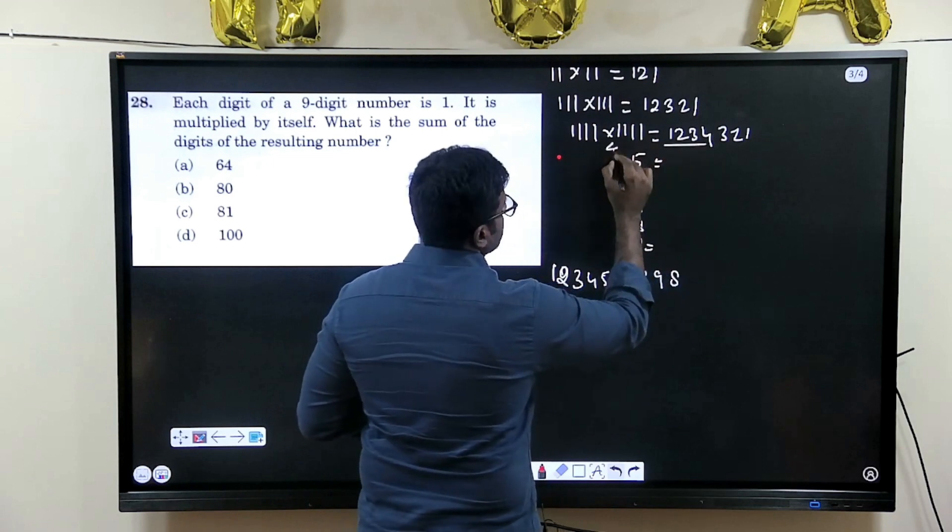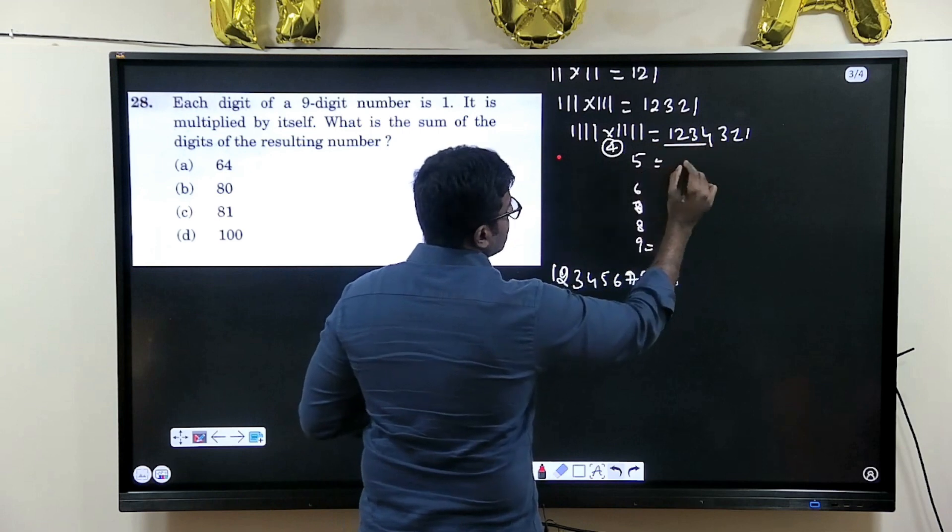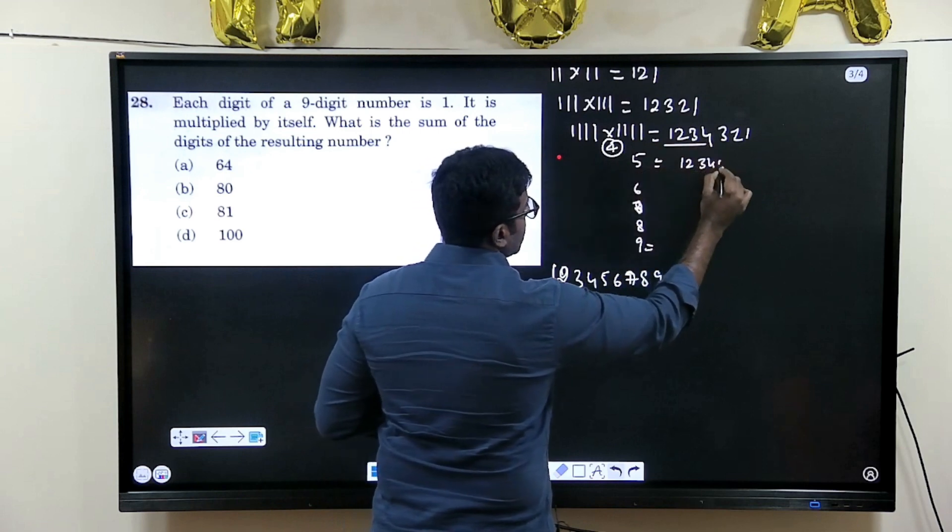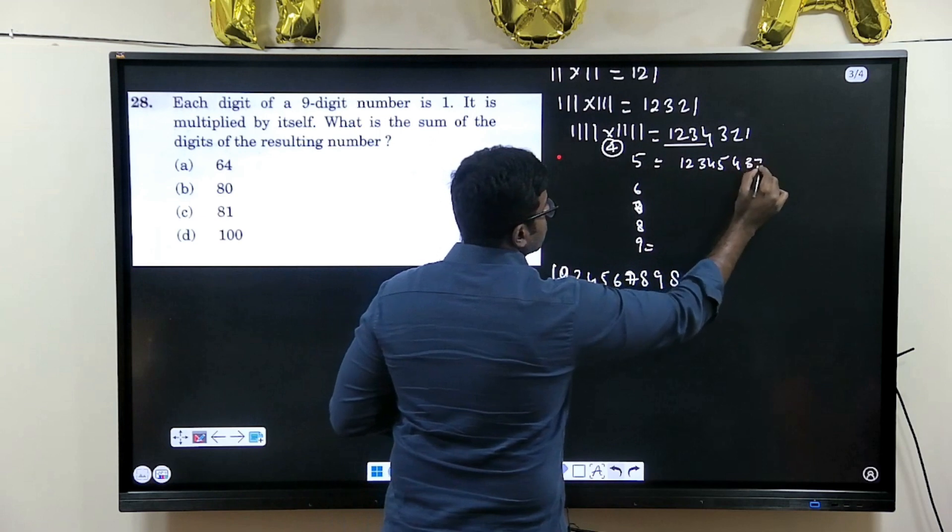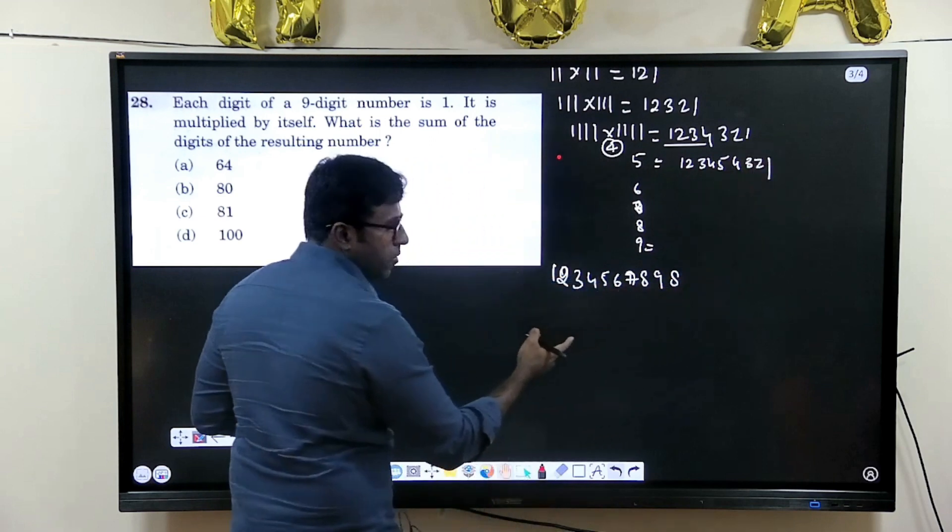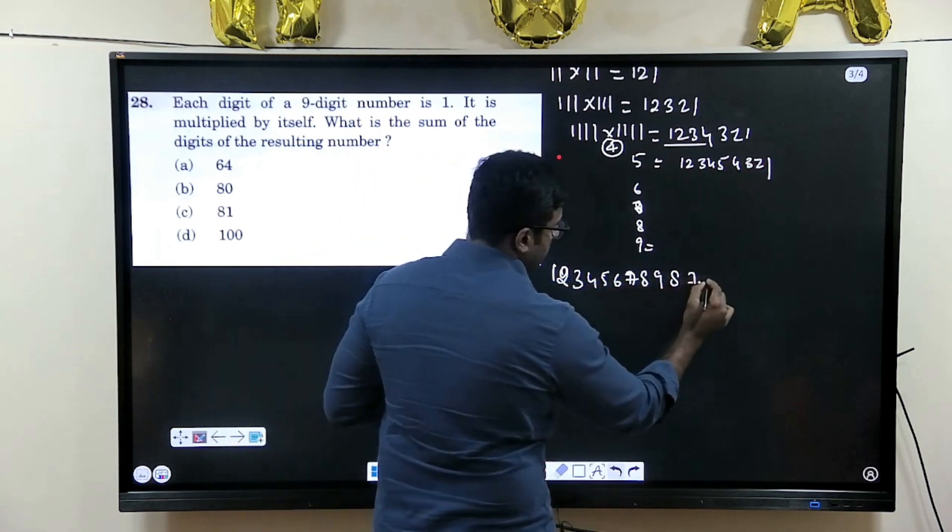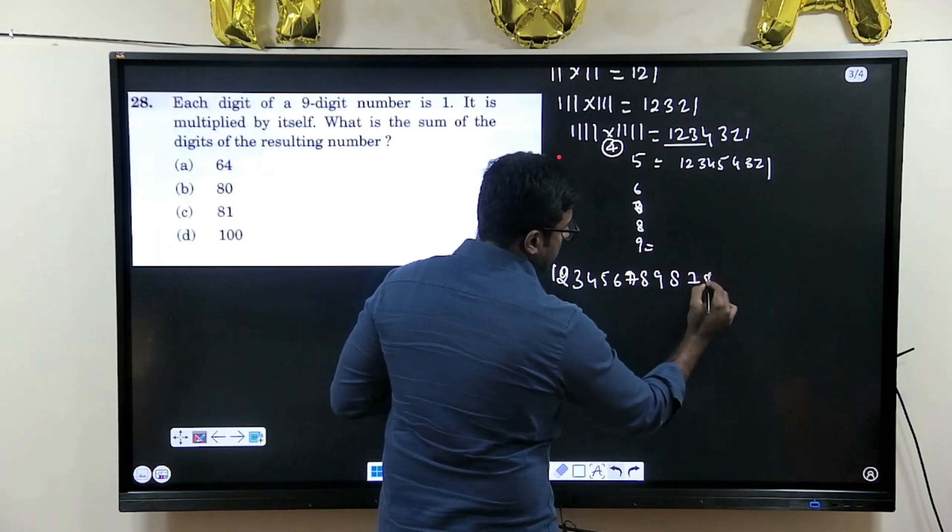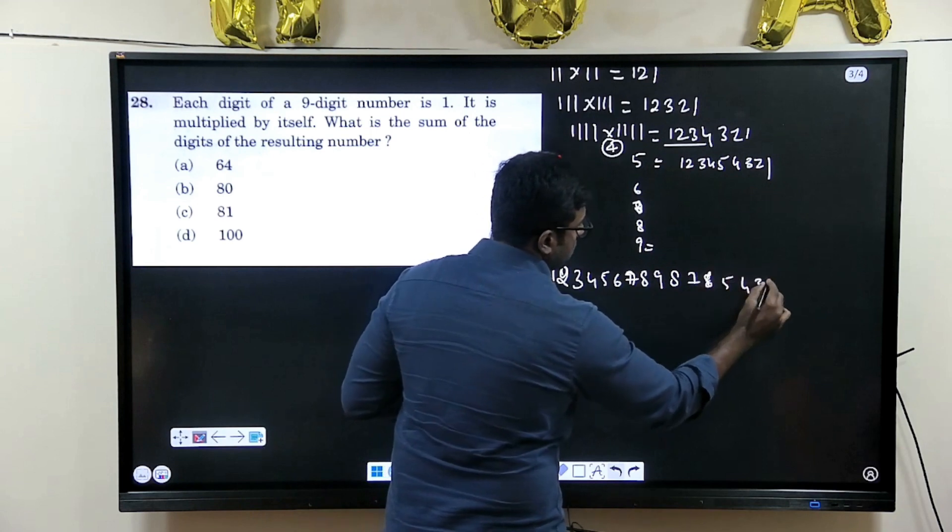Then you see this, if it is 4 means you will have 1, 2, 3, 4, 5 means 1, 2, 3, 4, 5, 4, 3, 2, 1. Similarly, you will have for 9, 1, 2, 3, 4 and 7, 8, 7, 6, 5, 4, 3, 2, 1.